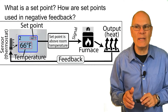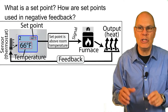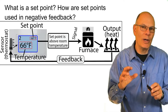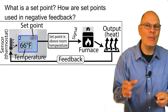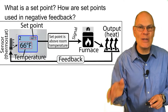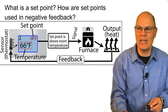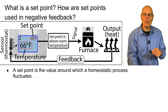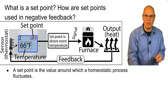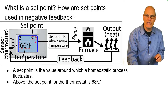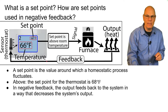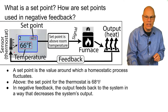Let's talk about set points. A set point is where you set the thermostat — it's the value around which a homeostatic process fluctuates. For example, the set point for the thermostat is 68 degrees Fahrenheit. In negative feedback, the output of the system feeds back to the system in a way that decreases the system's output.